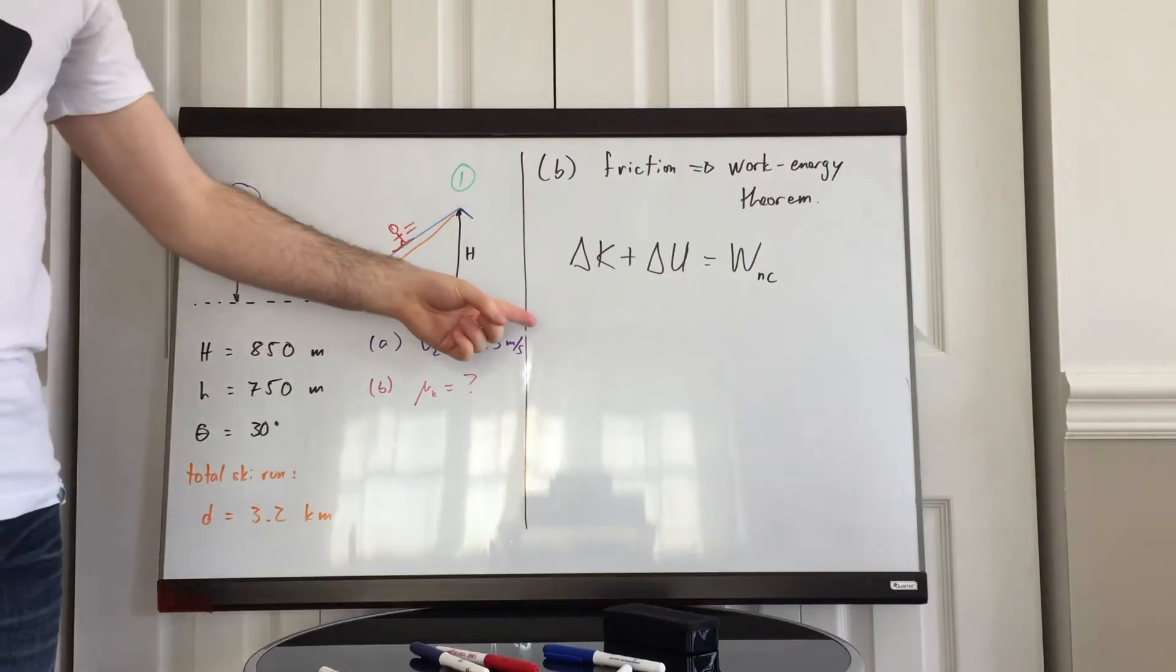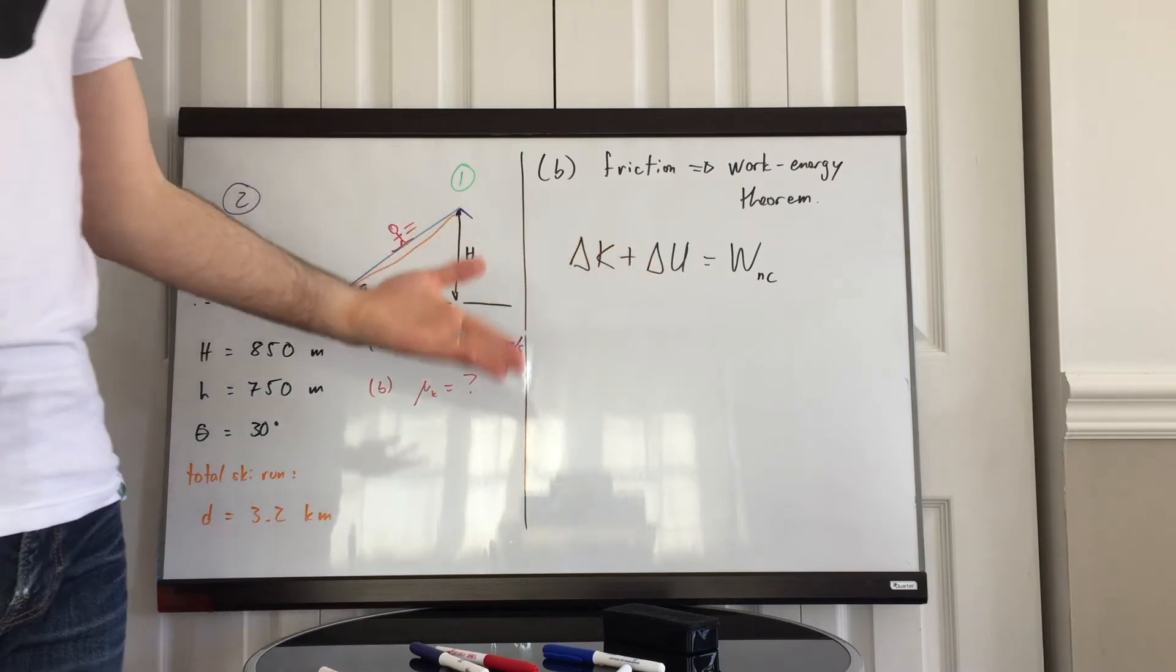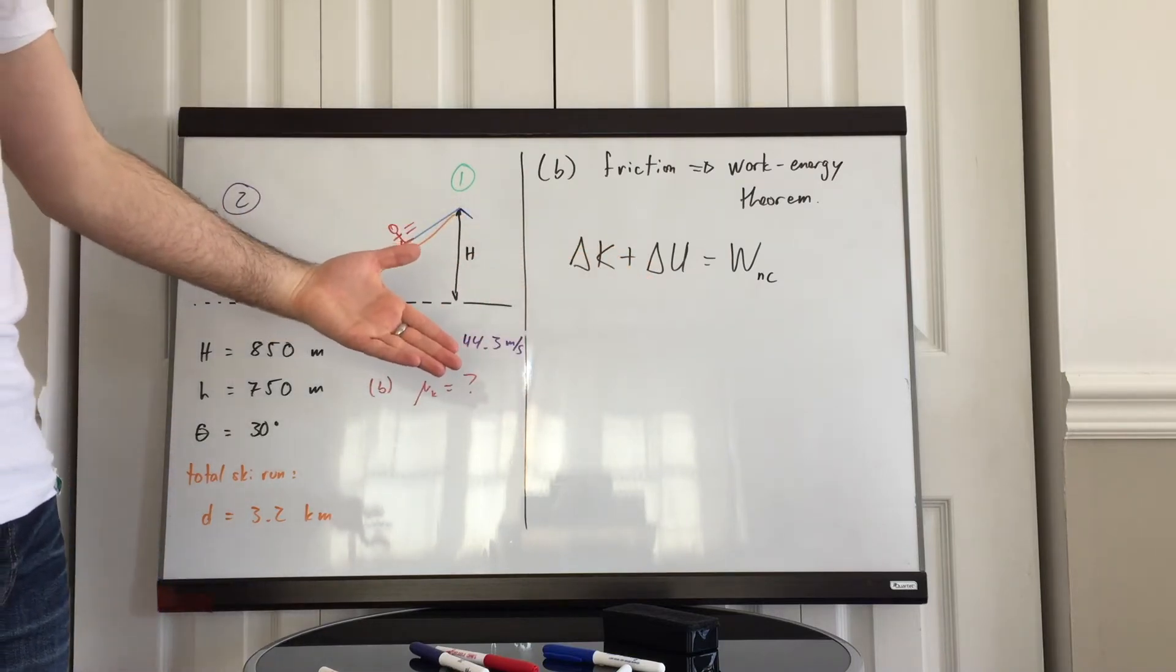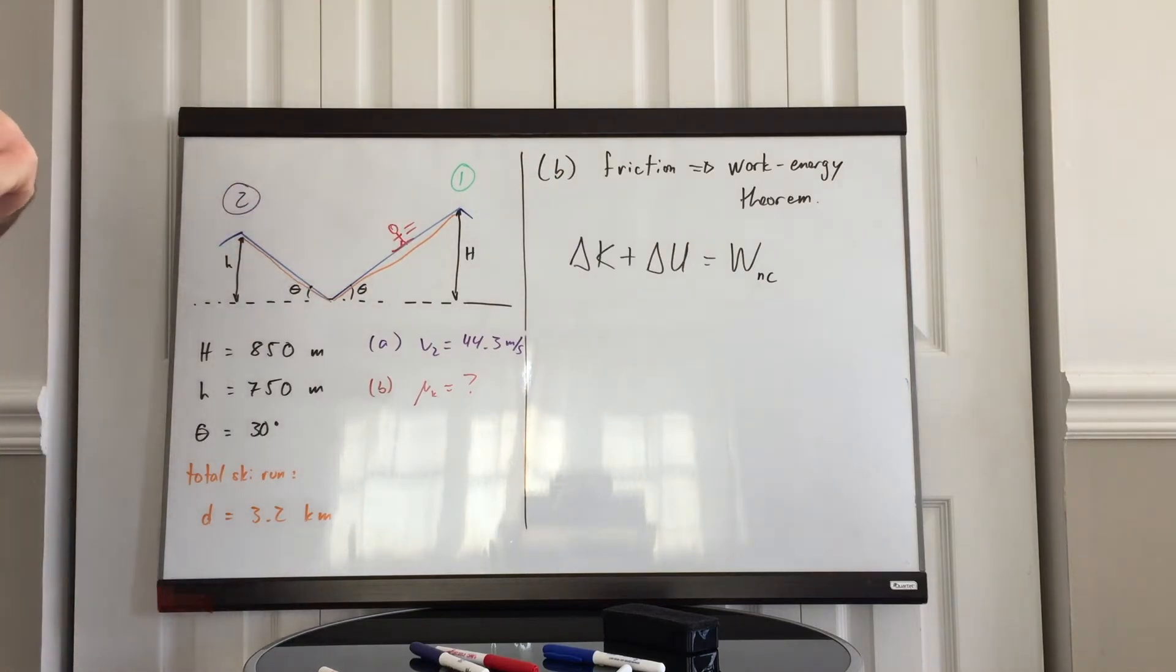The work energy theorem says that the change in kinetic energy plus the change in potential energy, in this case only gravitational potential energy, is equal to the work done by all of the non-conservative forces. That includes friction, air drag and water drag if there was any, and any external forces that would go in there. However, we know we don't have water, and there's nobody pushing on the skier. The only thing that's acting here is friction. So we can rewrite this last term as the work done by the kinetic friction force.